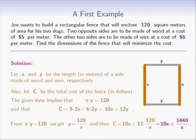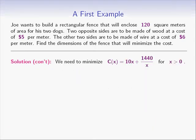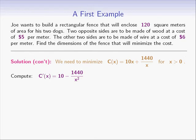Note that x has to be a positive number since it represents length. So we can concentrate on the purely mathematical problem of minimizing the function c(x) = 10x + 1440/x for x greater than 0. To do that, let's compute the first derivative c prime, which equals 10 minus 1440 over x squared, and then equate it to 0.